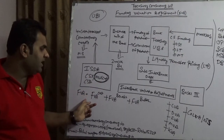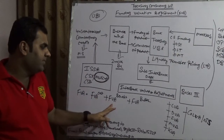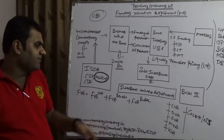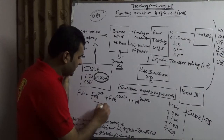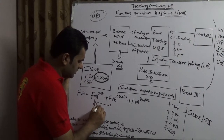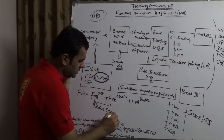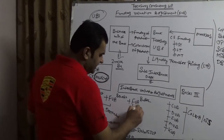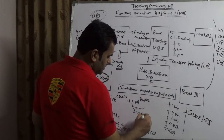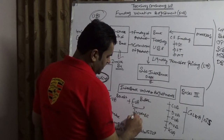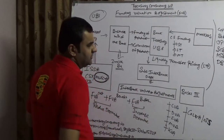Technically, FVA can be divided into three parts: FVA Cost, FVA Benefit, and FVA Buffer. Together, FVA Benefit and FVA Buffer will reduce derivative cost, while FVA Cost will increase derivative cost.